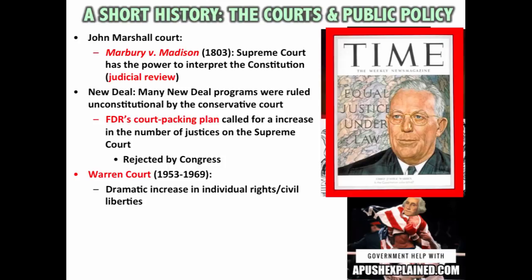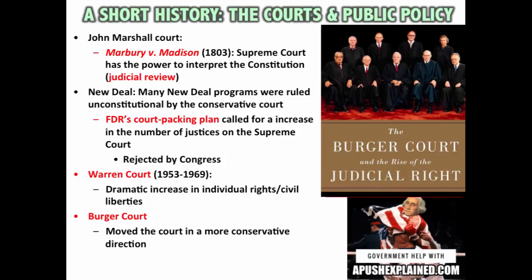Then there is the Burger Court — Earl Warren retired in 1969, and Nixon appointed a new conservative Chief Justice, Chief Justice Burger. This is often seen as the court moving in a more conservative direction, though cases like Roe v. Wade still came down under the Burger Court. More recently, especially since 1980, there has been more of a conservative tilt on the Supreme Court, though there has not been a complete reversal of previous civil liberties and civil rights protections. The court still tries to respect precedent and is not supposed to be involved in partisan issues — it's supposed to just uphold the law.